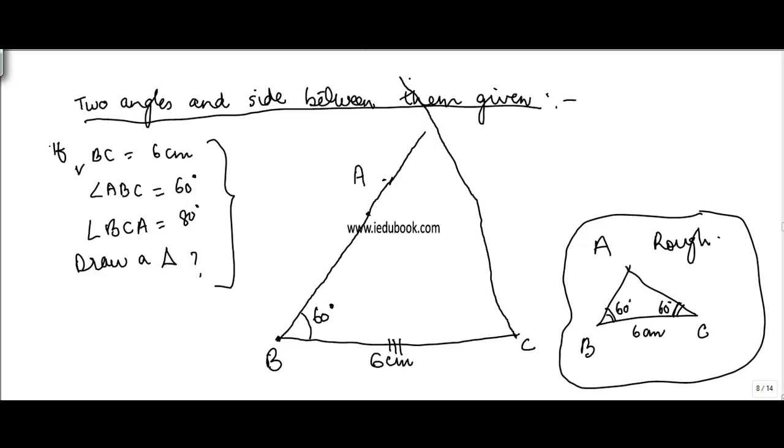Then you will extend this line which you had drawn such that it intersects this particular line somewhere. Again the point of intersection will be point A. So 80 degree has to be around this point.